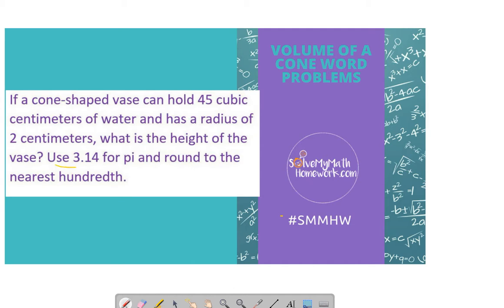When they tell you to use 3.14 for pi, that means we're not going to hit the pi button. There are other clues here. The fact that it says cubic centimeters and tells us capacity—that it can hold 45—all of that tells us volume. Cubic means we're dealing with volume.